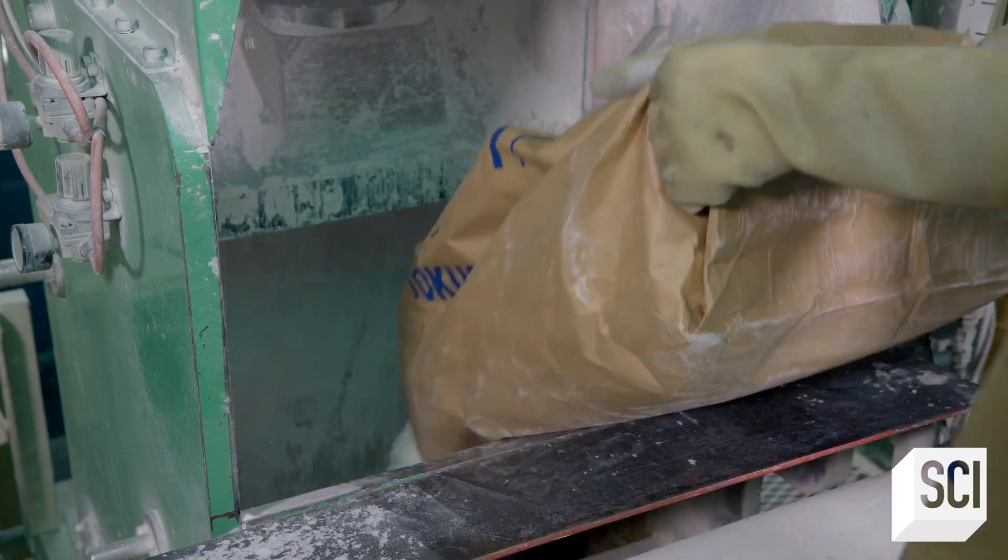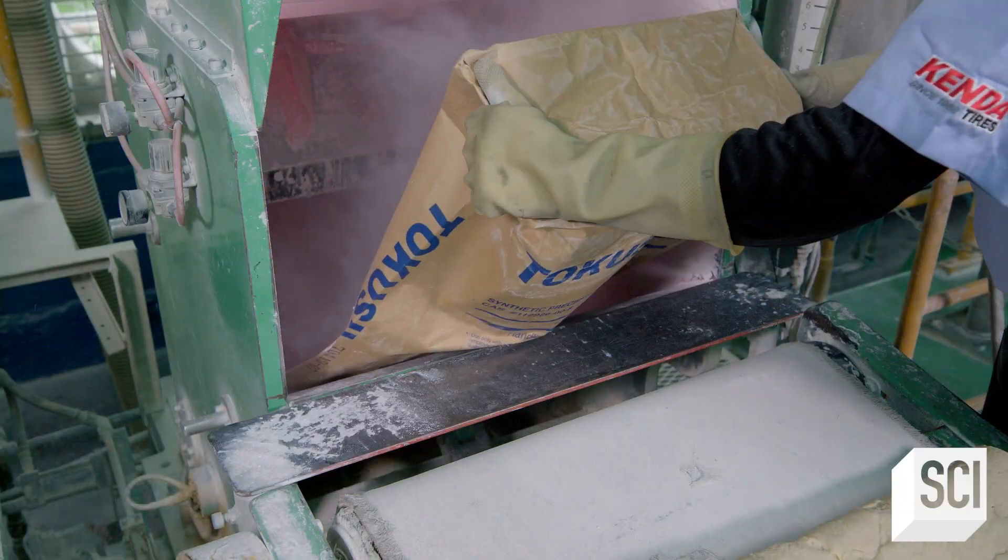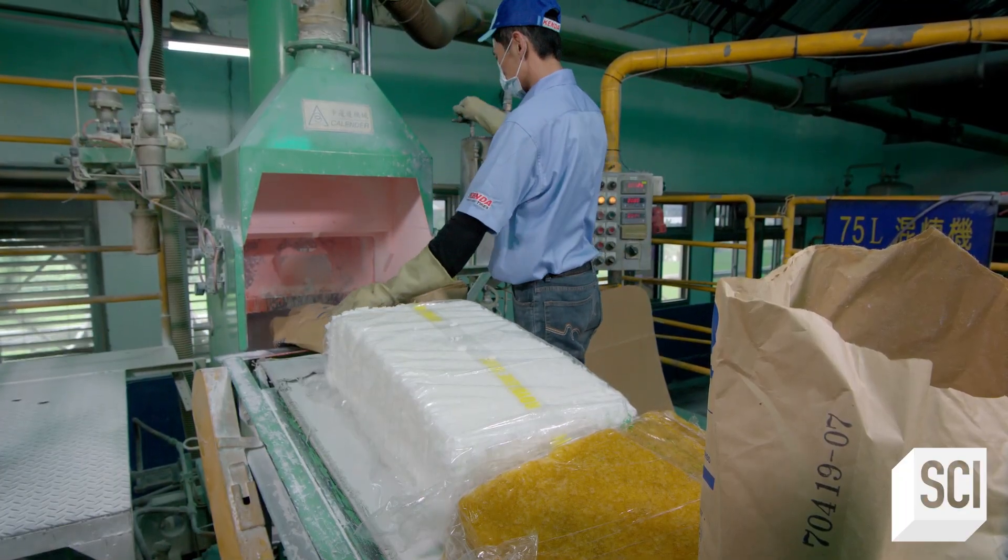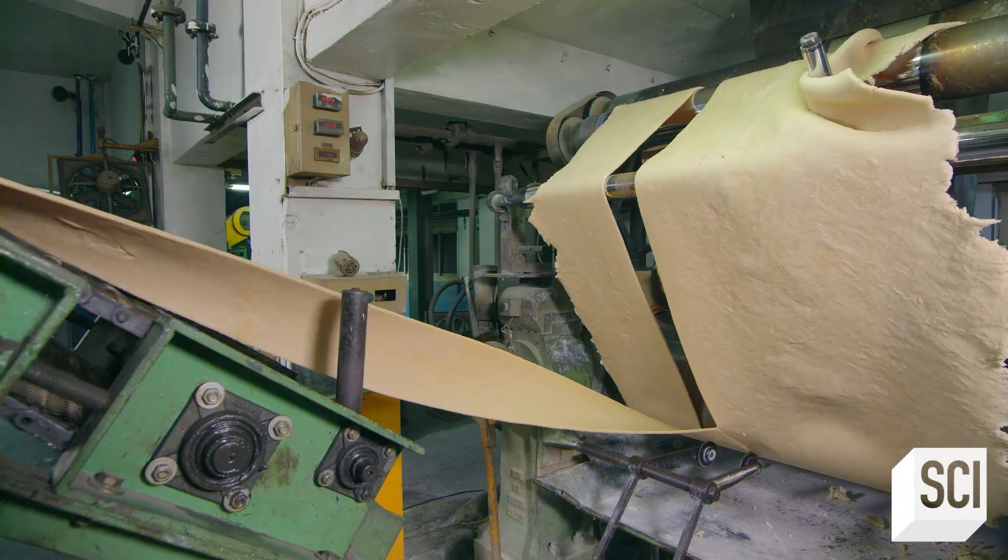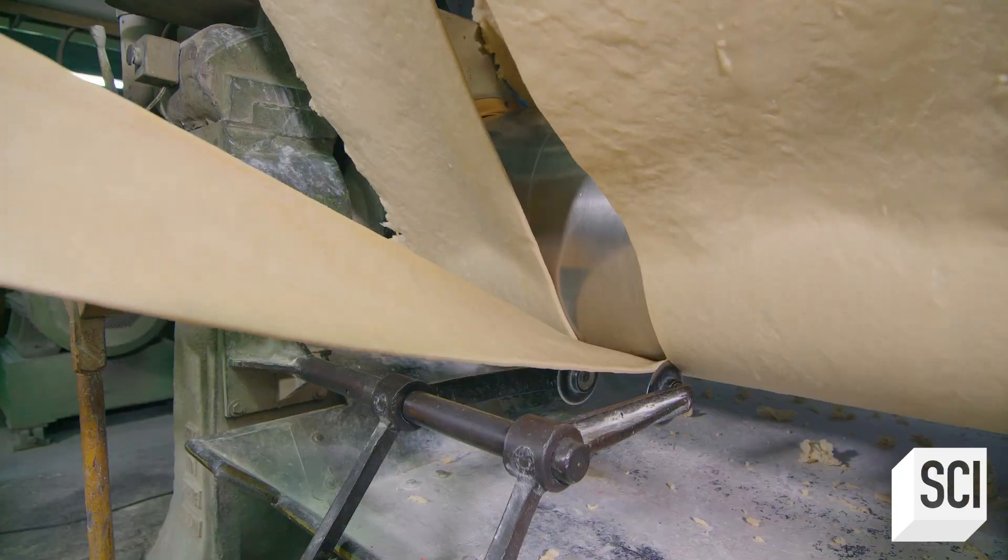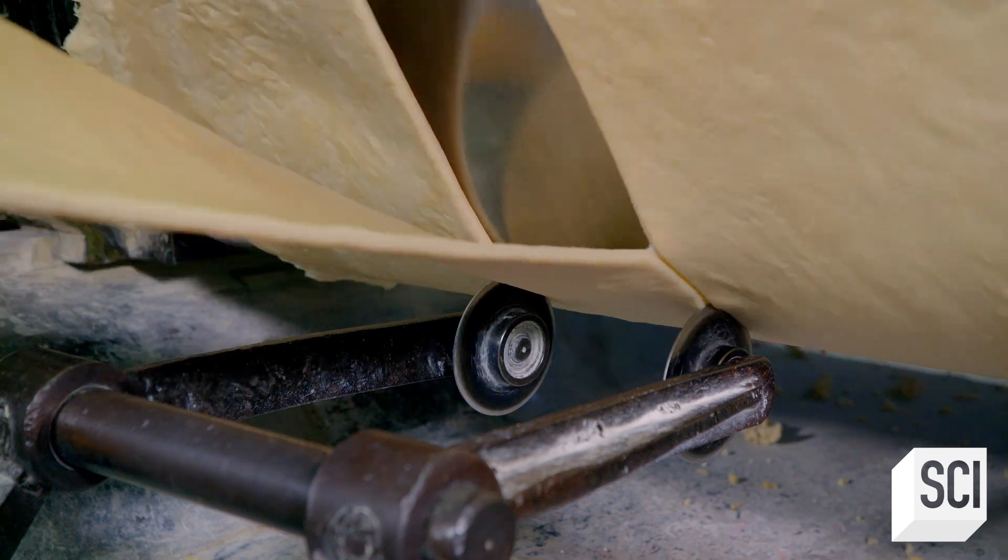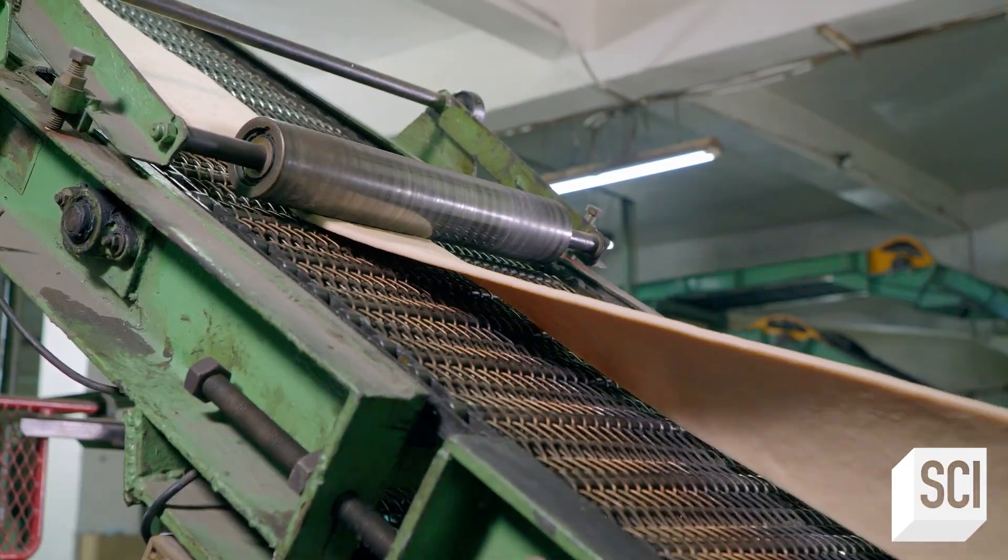Rotating spiral blades break down the materials. Friction from the mixing heats and softens them. This transforms the ingredients into a dough-like rubber compound. Powerful rollers squeeze the compound into thick, long sheets, and blades cut the rolled rubber into narrow strips.